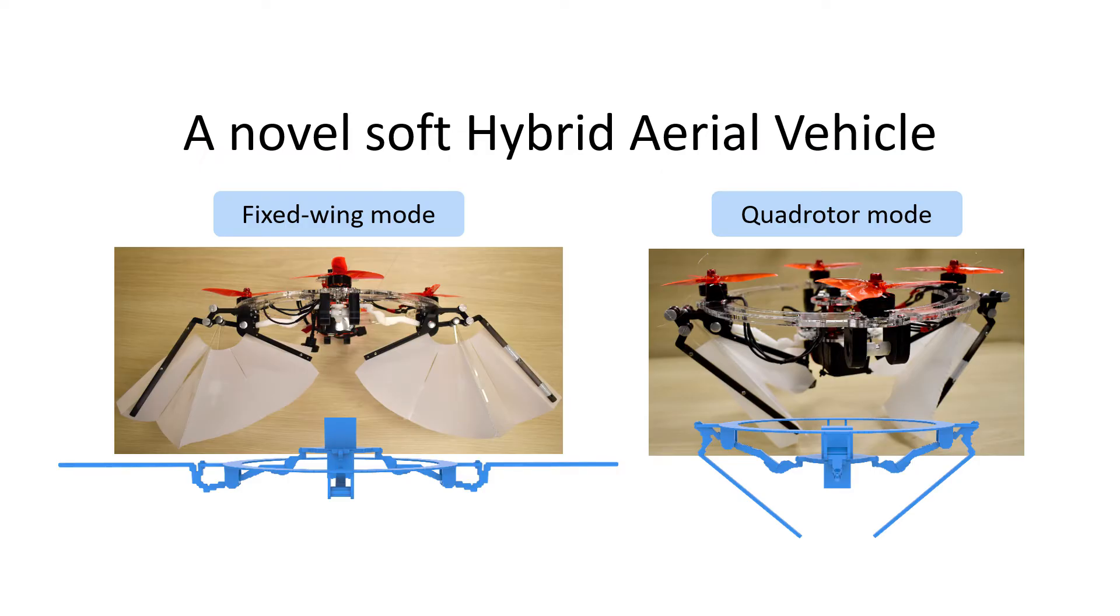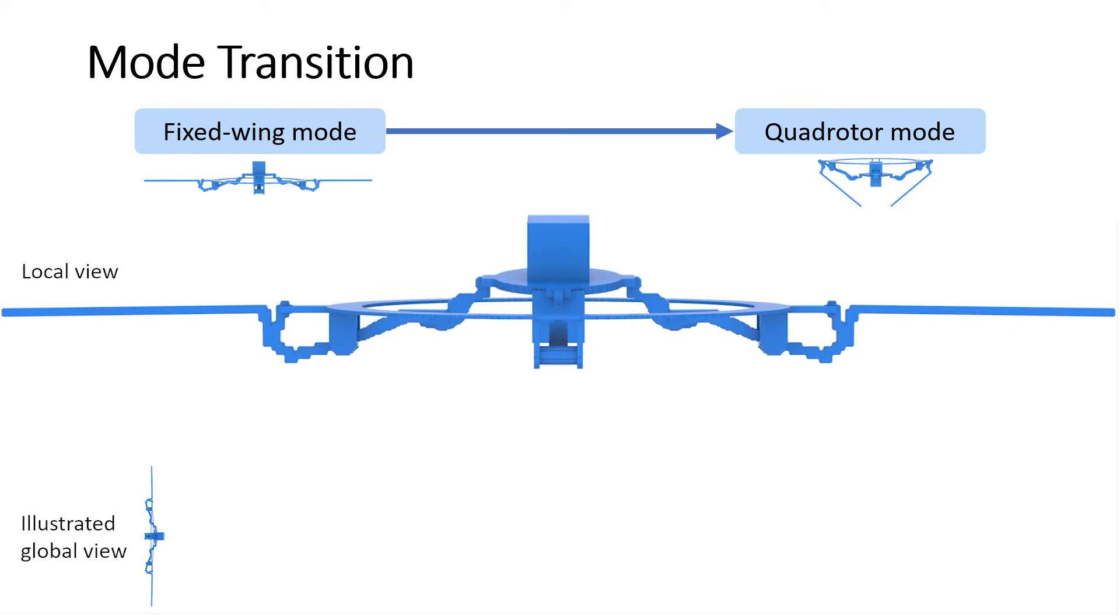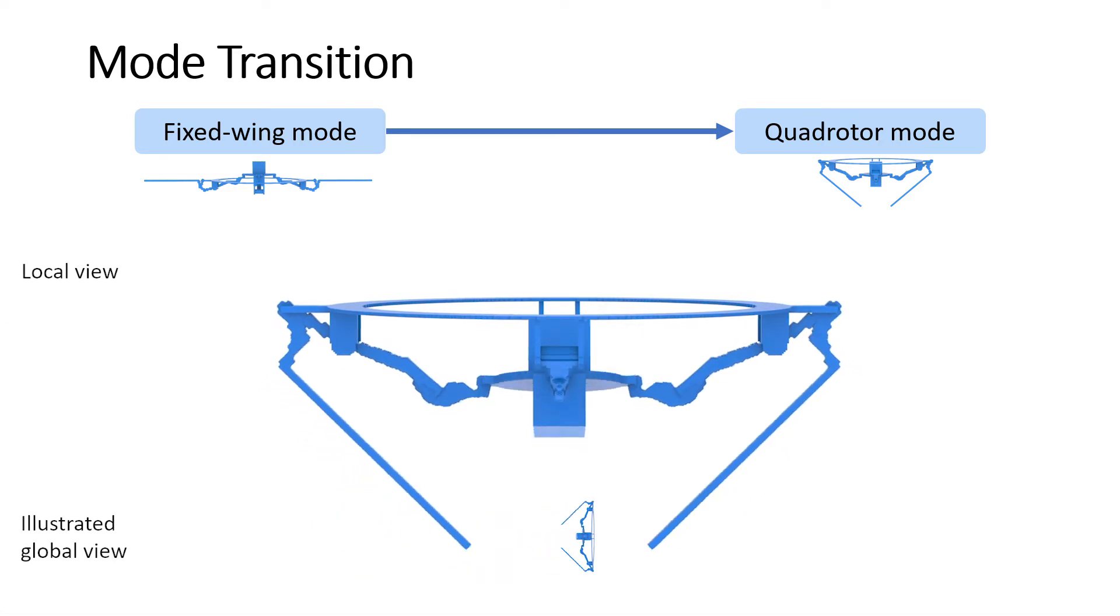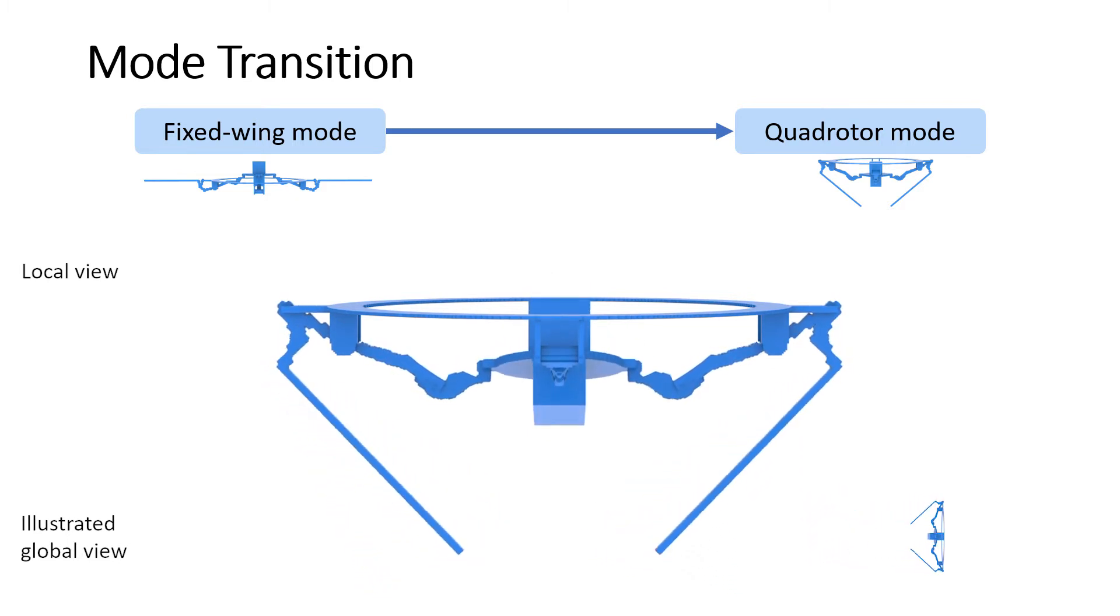We will illustrate how the transitions work. To transition from fixed-wing mode to quadrotor mode, we accelerate the ring suddenly. The fictitious inertial force will drag the central mass to the second equilibrium. After the propellers stop outputting thrust, it will remain in the quadrotor mode.